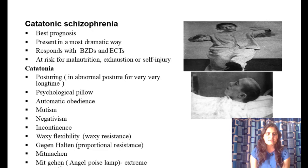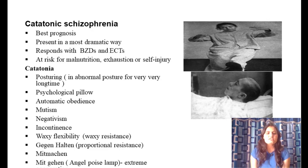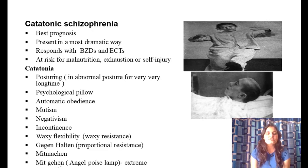Symptoms of catatonic schizophrenia include: posturing (maintaining an abnormal posture for a very long time); psychological pillow (the person holds their head up as if resting on a pillow that isn't there); automatic obedience (following whatever command is given, even harmful ones); mutism (lack of speech); and negativism (resisting whatever is asked — the opposite of automatic obedience).